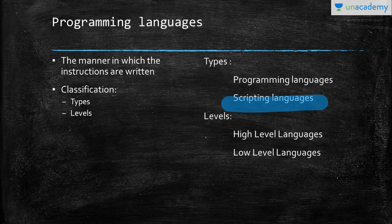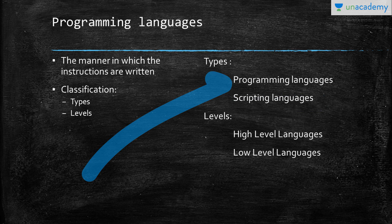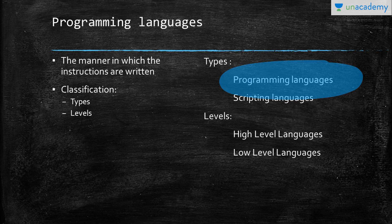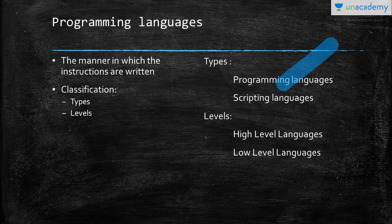Types of programming languages can be defined in two ways: programming languages and scripting languages. What's the difference between both of them? Programming languages are made to solve algorithmic and mathematical problems.